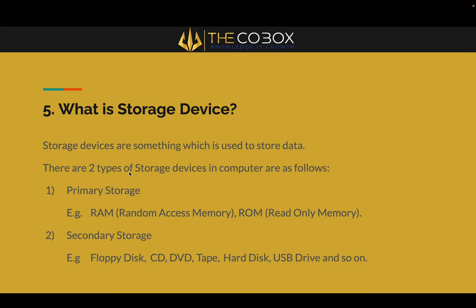The next main thing is the storage device. Storage devices are used to store data — that's the basic definition. There are two types of storage: primary and secondary. Primary storage is the basic need of the system required to run it — these are RAM (Random Access Memory) and ROM (Read Only Memory). Secondary storage includes floppy disk, CD, DVD, tape, hard disk, USB drive, and so on.